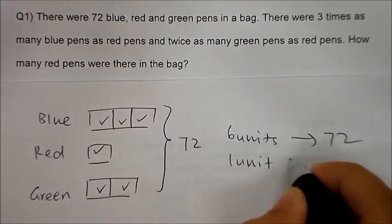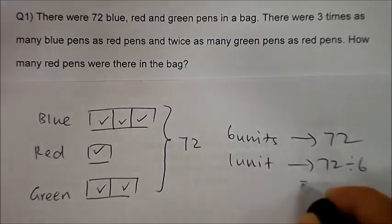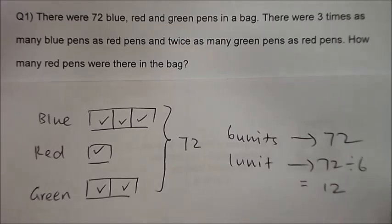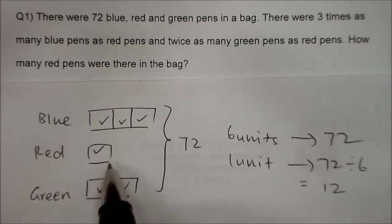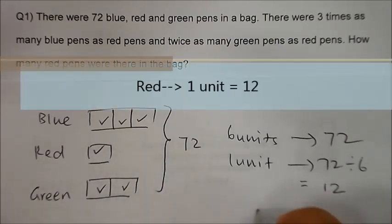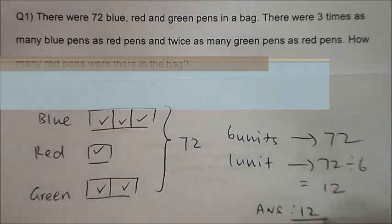We have to find that one unit: 72 divided by six. And what do we need to find? We need to find red pens in the bag. Refer to the diagram—there's one unit, so the answer is 12. Thank you.